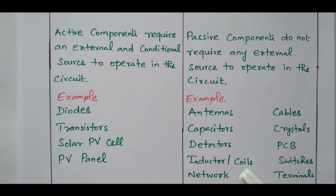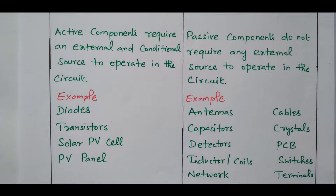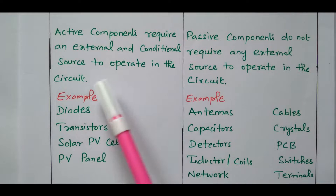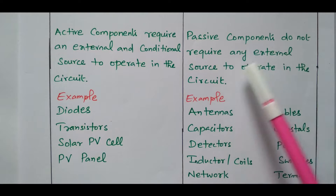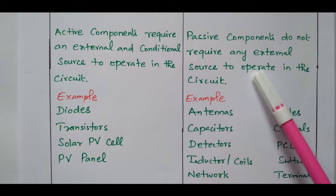Active components require an external and conditional source to operate in the circuit. For example, an amplifier or a voltage source needs a supply to work — external and conditional source is required. For a power amplifier, we need to provide power for it to amplify. So, external and conditional source is required to operate active components. But passive components do not require any external source to operate — when connected, they will absorb whatever energy is available in the circuit and either store it or dissipate it as heat. The external source is not required for passive components.